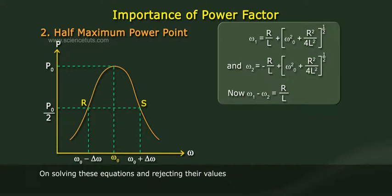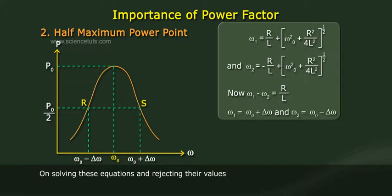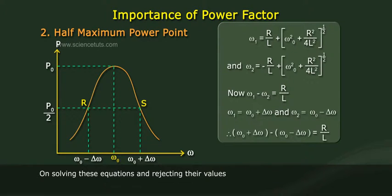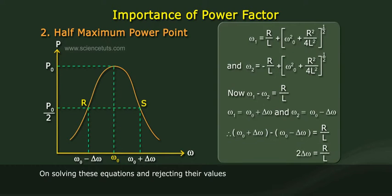From the above figure, ω₁ equals ω₀ + Δω and ω₂ equals ω₀ − Δω. Therefore (ω₀ + Δω) − (ω₀ − Δω) equals R/L, giving 2Δω equals R/L. So the bandwidth is R/L.